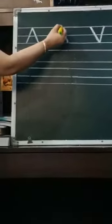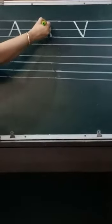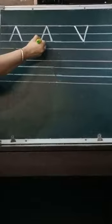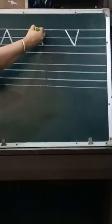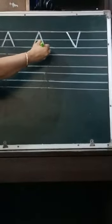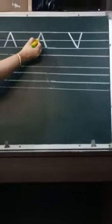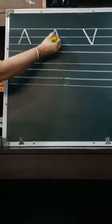Again, put pencil on the top red line. Touch the bottom blue line. Stop. Lift your pencil. Again, put pencil on the top red line. Stop on bottom blue line. Lift your pencil. Again, put pencil on the top blue line. Make a slipping line. Stop. Lift your pencil.